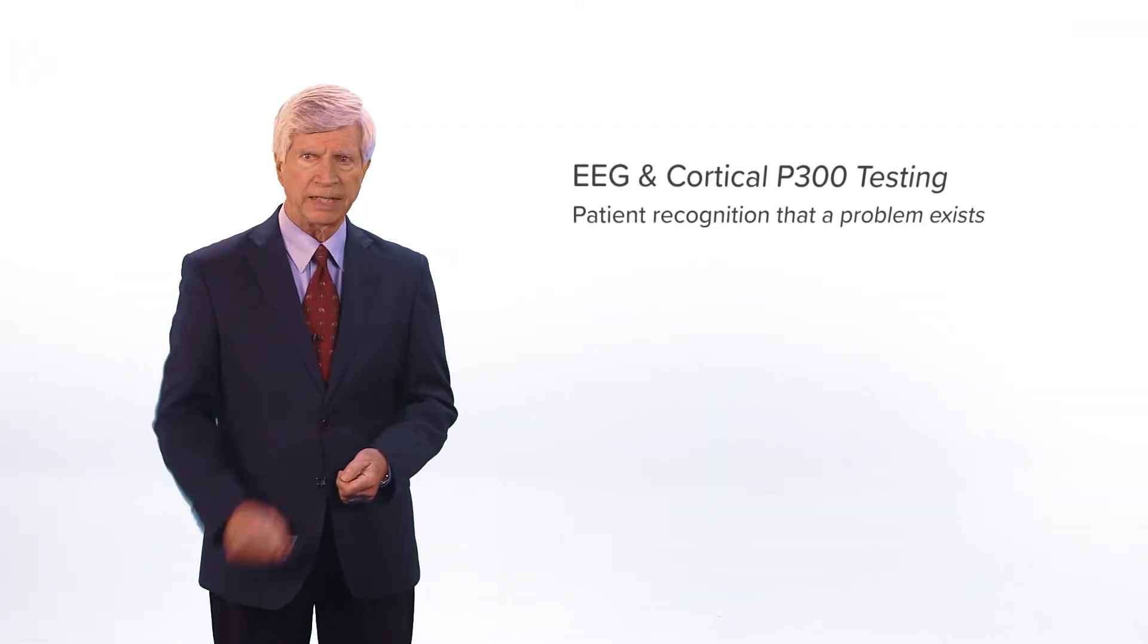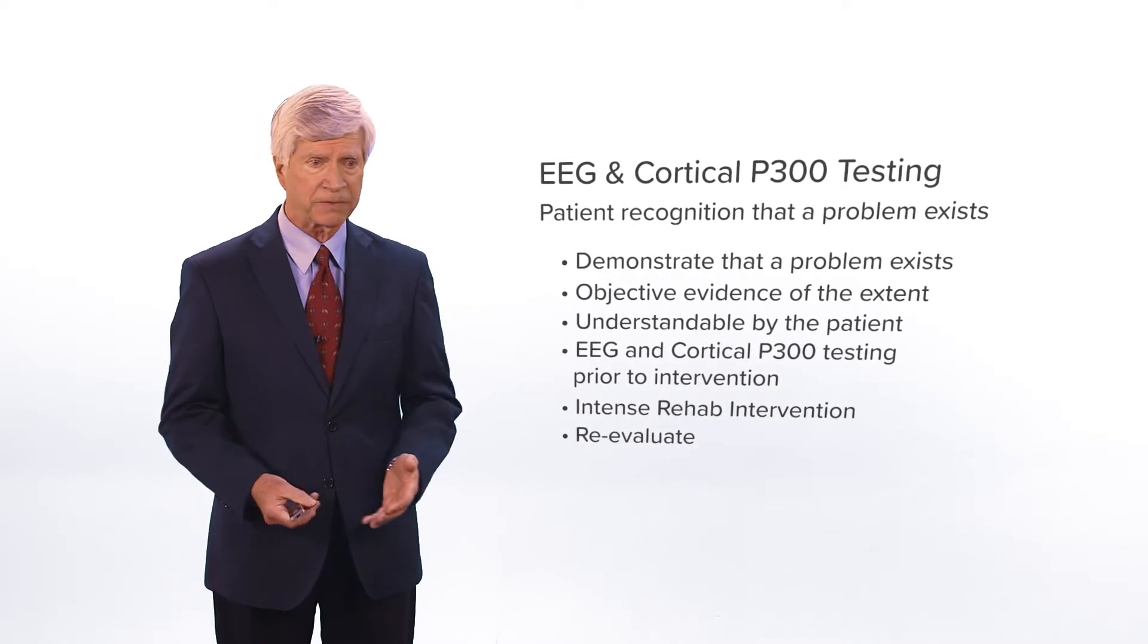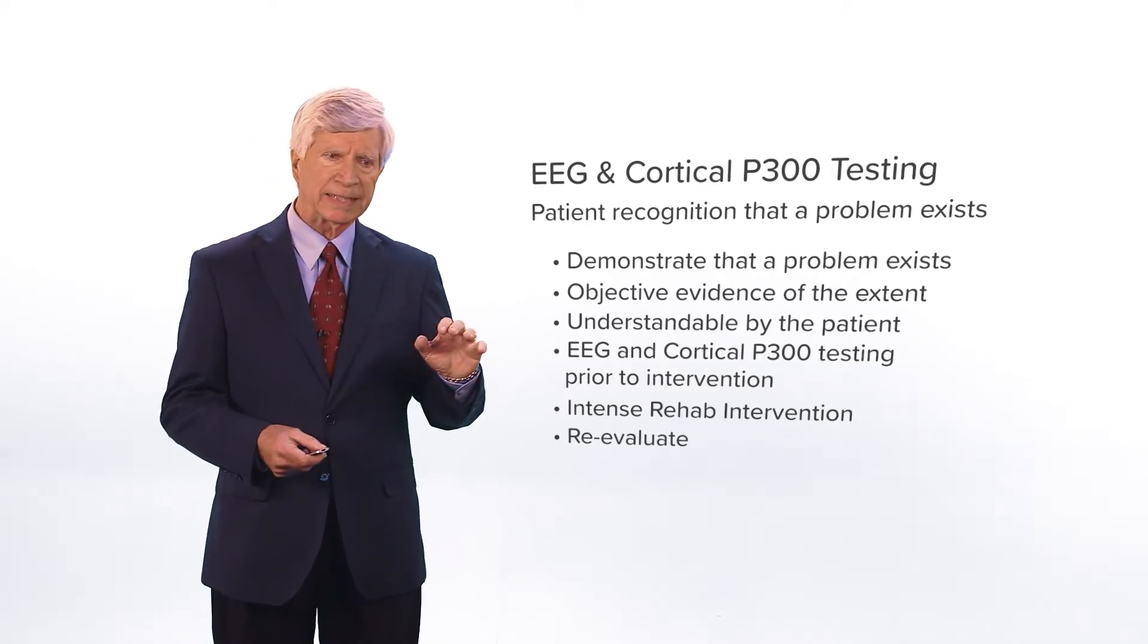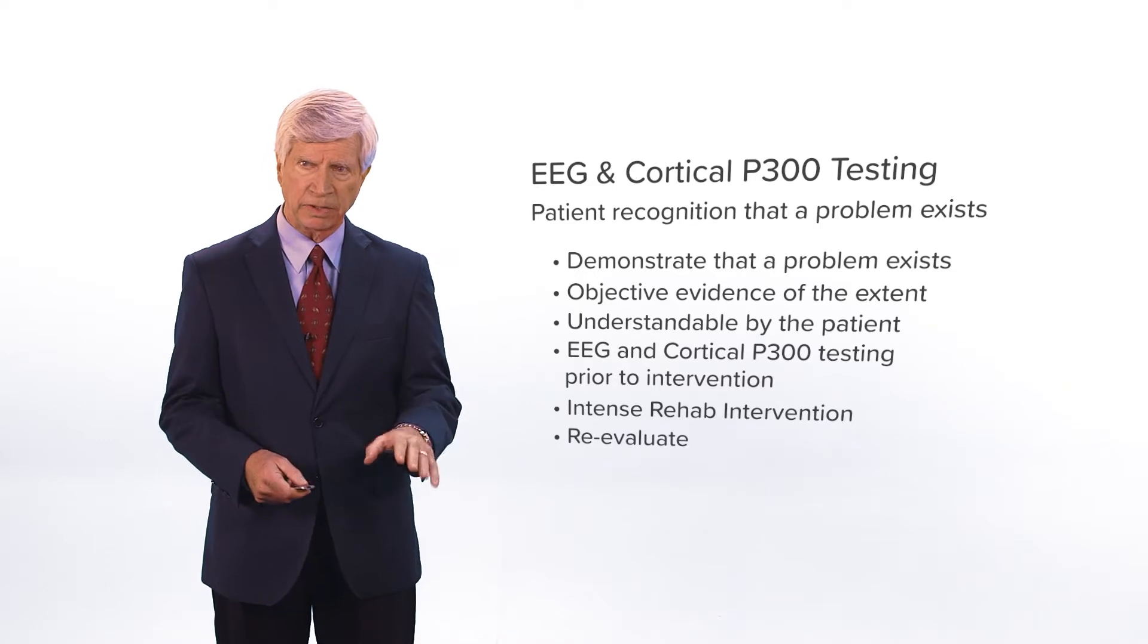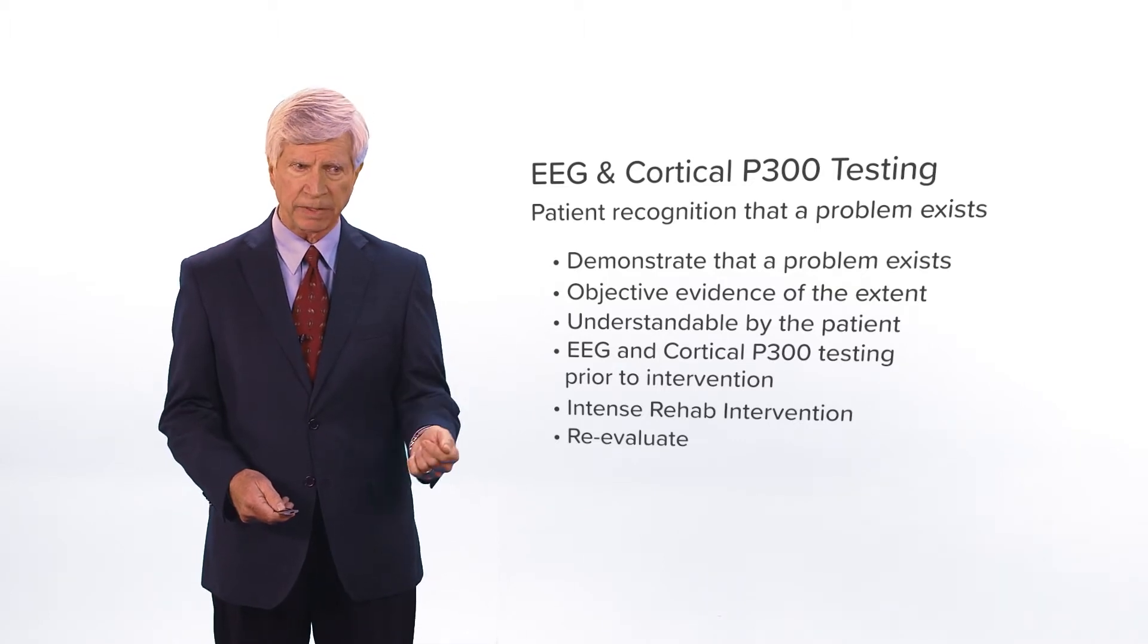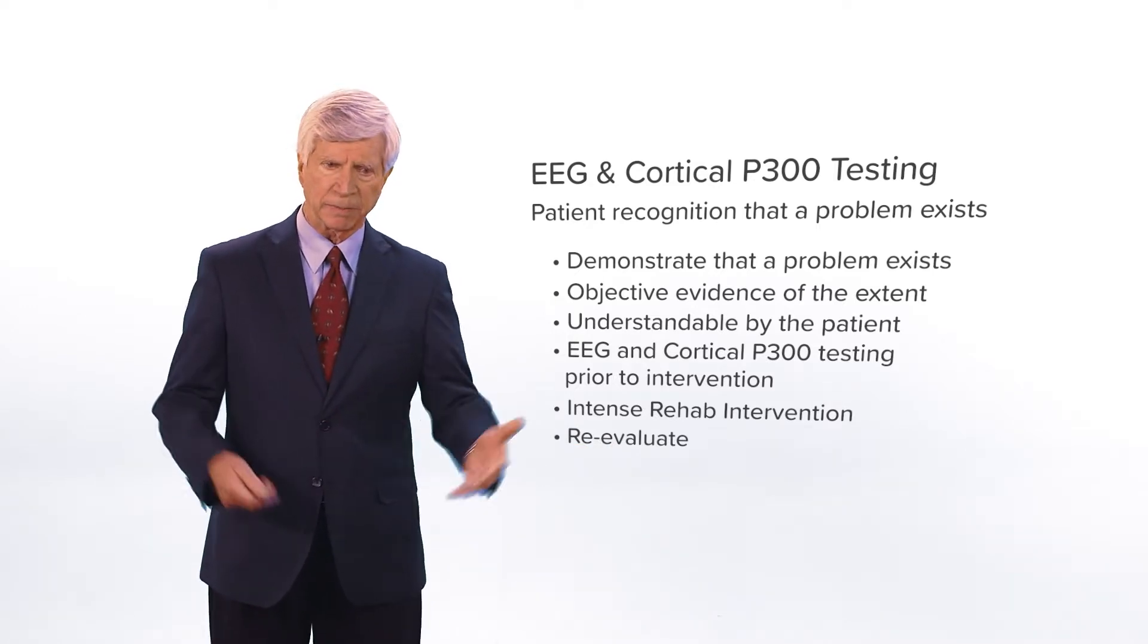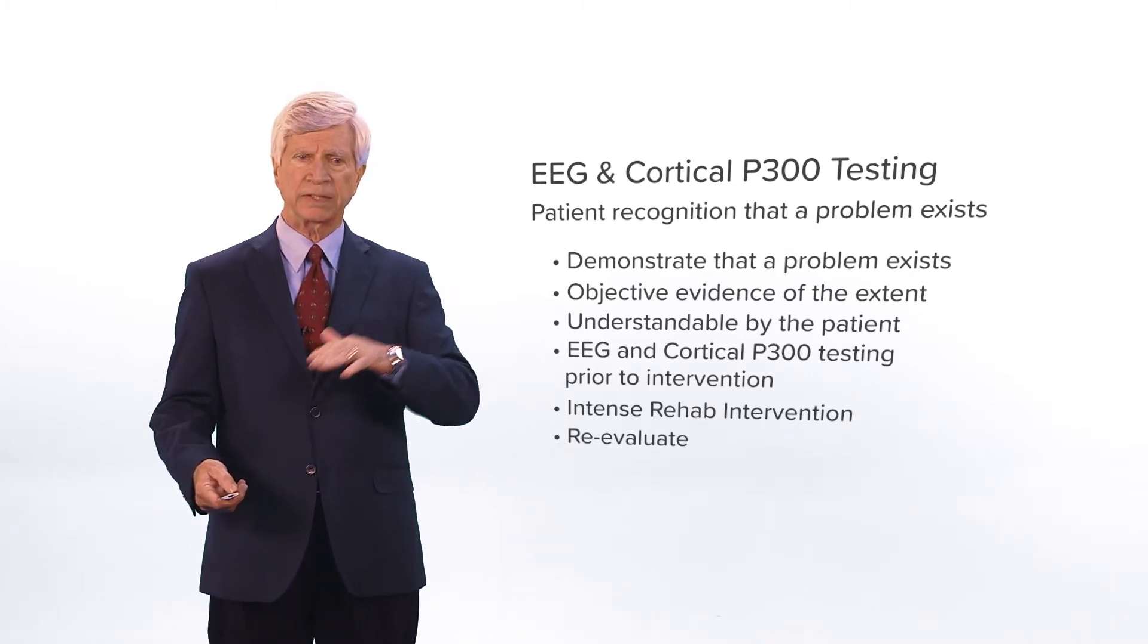So EEG and cortical P300, why do we do this? Our patients come to us with some deficit, some problem. It would be very nice to be able to show them objective evidence of what their brain is capable of doing and what their brain, unfortunately, is not doing at this time. So we can show this with the EEG coupled with P300 cortical evoked response. You demonstrate to yourself and to the patient, as well as the family, that the problem exists. We have a baseline, and then we can have our best interventions applied to the patient. As they progress forward, you can see the functional improvement.